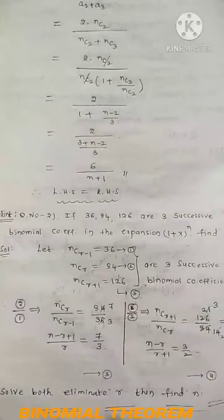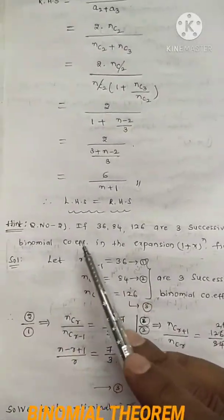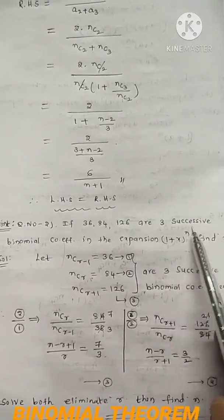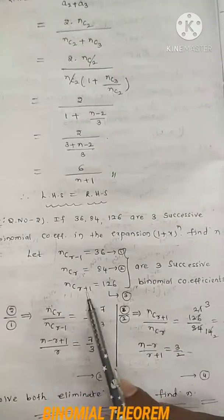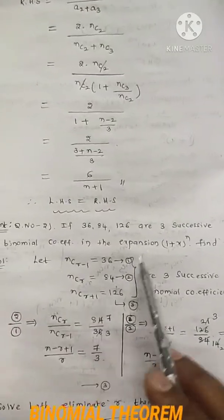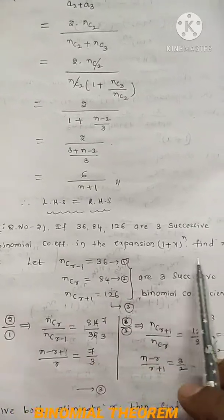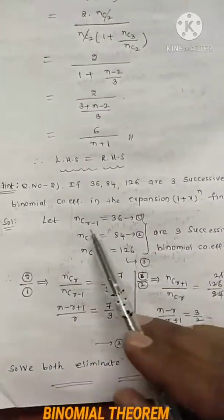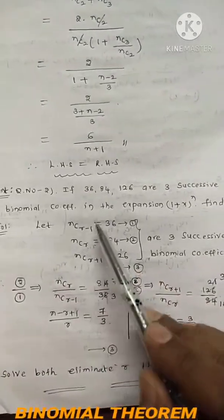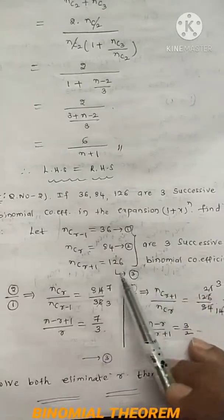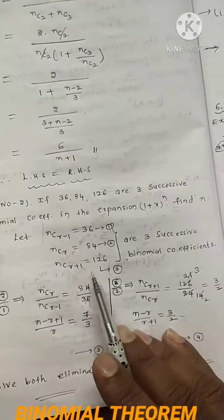Homework hint: Question number 4 — if 36, 84, 126 are three successive binomial coefficients in the expansion of (1+x)ⁿ, find n. Let nCr-1 = 36, nCr = 84, nCr+1 = 126. Set up two ratio equations and solve simultaneously to find r, then find n.